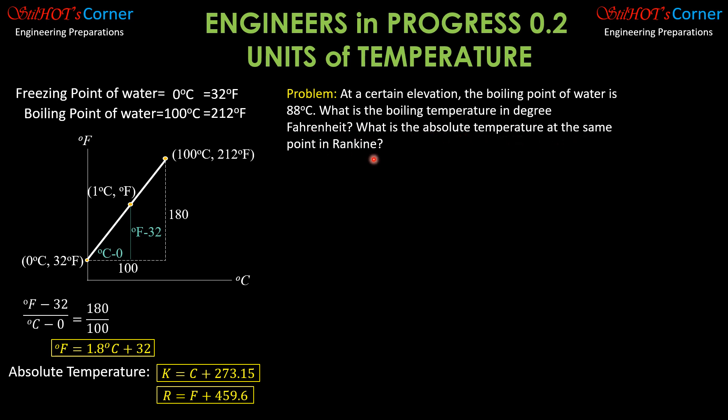So for the boiling point in degree Fahrenheit, this is the relationship: Fahrenheit temperature scale is equal to 1.8 times temperature in degree Celsius plus 32.